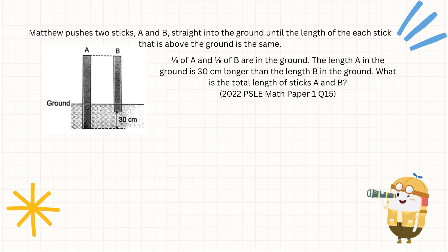Matthew pushes two sticks A and B straight into the ground until the length of each stick that is above the ground is the same. One-fifth of A and one-eighth of B are in the ground. The length of A in the ground is 30 cm longer than the length of B in the ground. If we were to remove both A and B, all we are left with is at the bottom, which is the sections inside the ground.